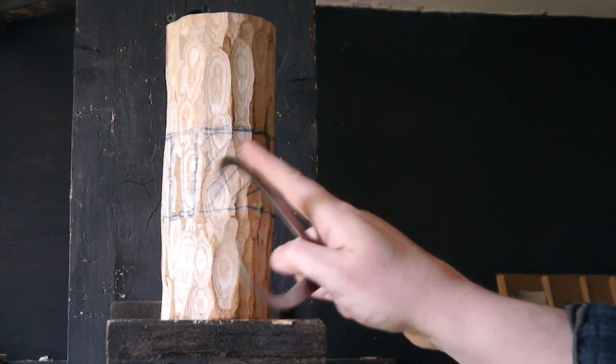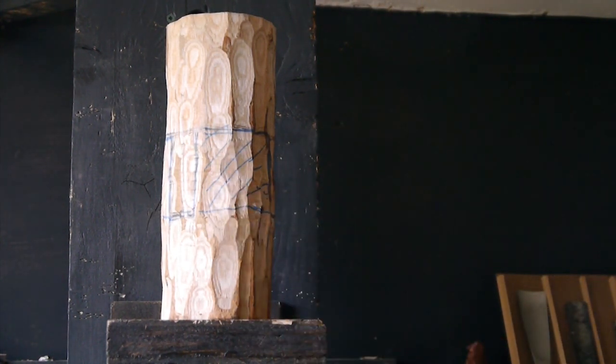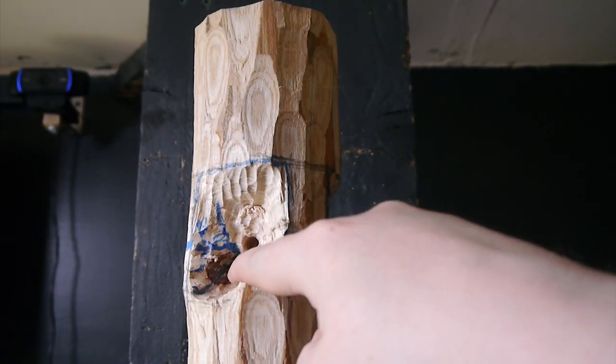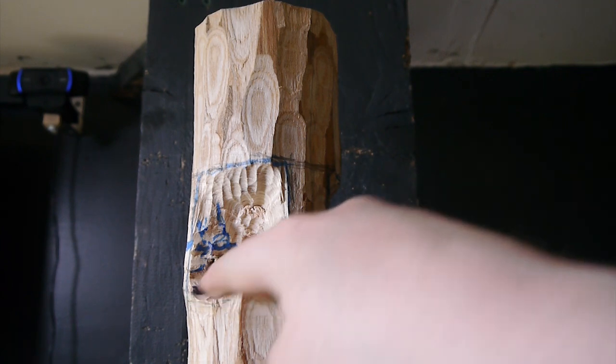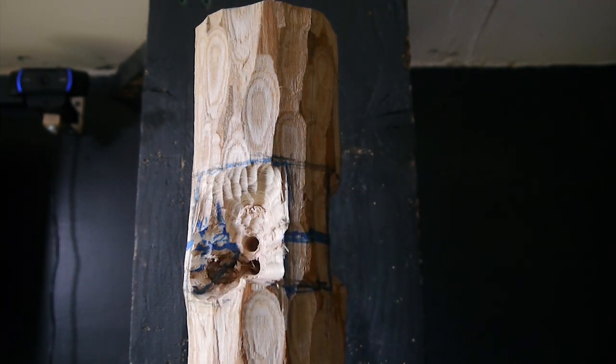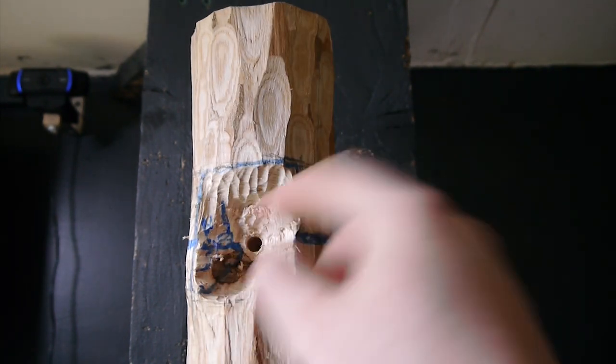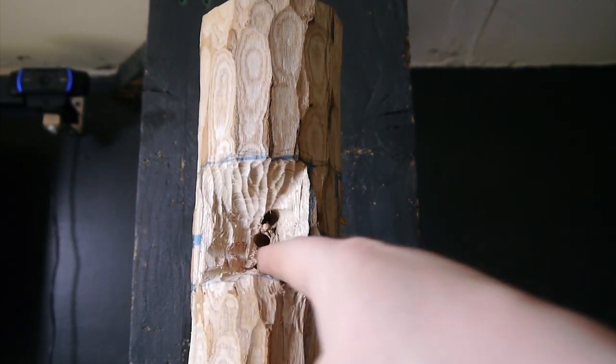I've now highlighted the places that I want to take out. That's what I'm going to start doing now. I wasn't paying attention to where the knots are in this piece. I knew there were some knots but I wasn't really paying attention. There's one right here and the same knot I think carries on through here.